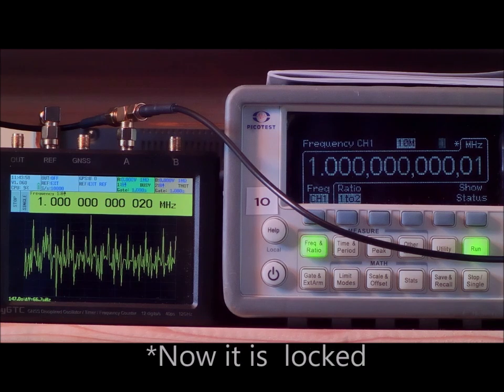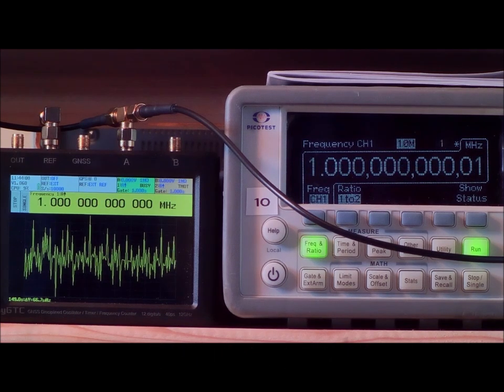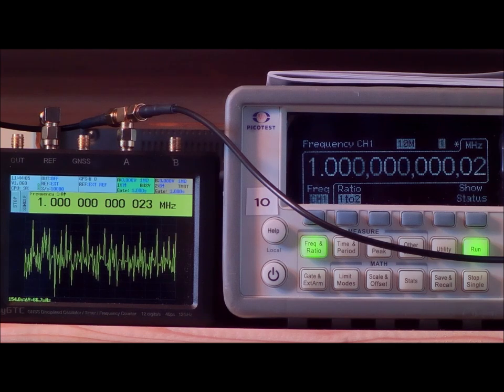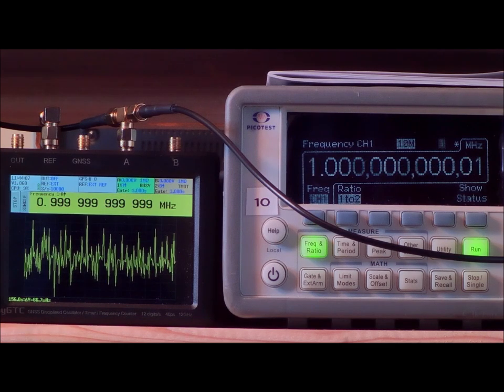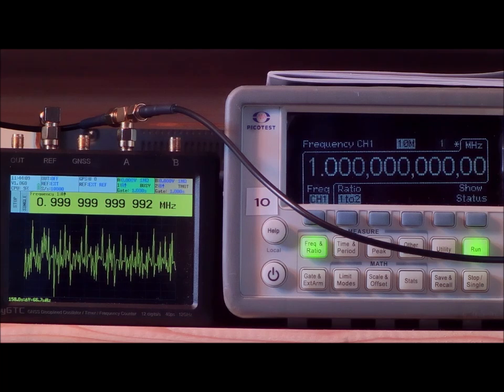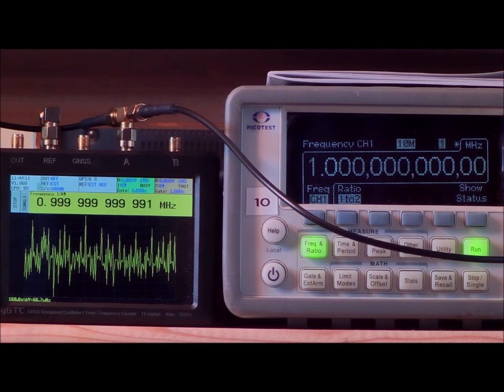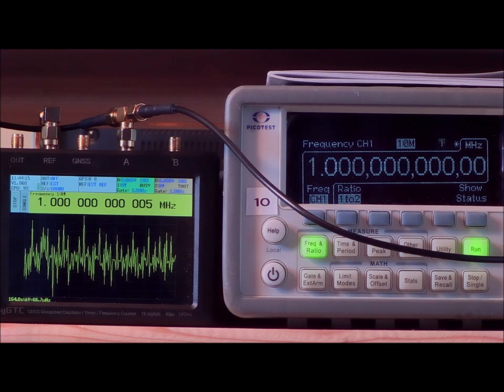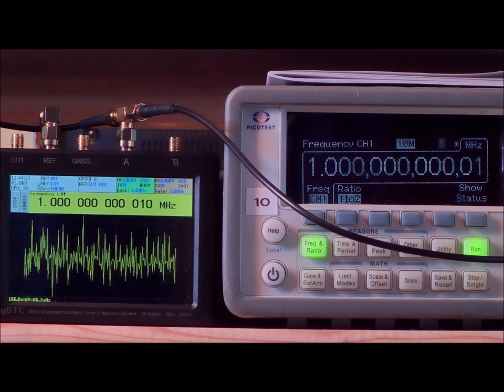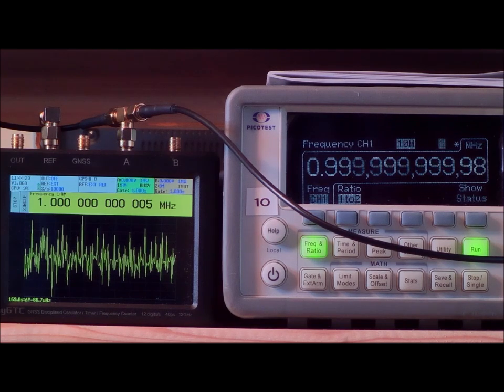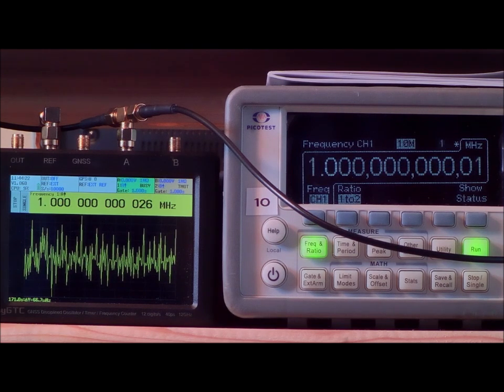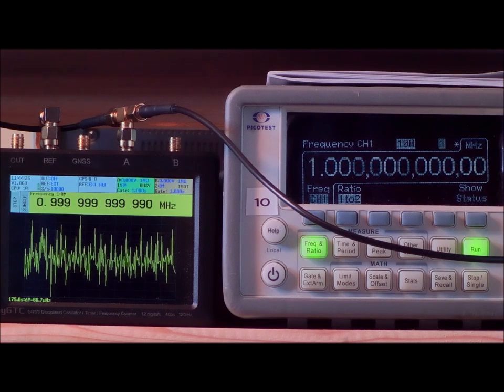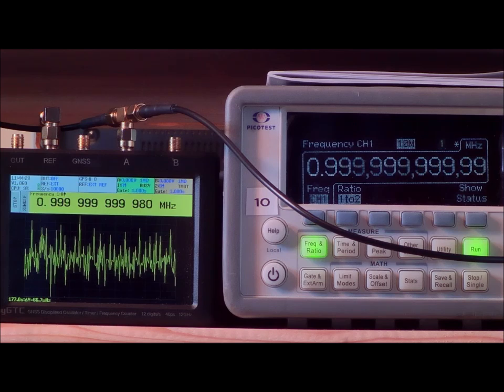Keep in mind the TinyGTC displays one additional digit, which doesn't mean it has one digit more accuracy, but when you compare the readings, you have to think about that extra digit. The frequency variation that is tracked in the chart underneath the measurements is peak-to-peak 66 microhertz compared to the actual measured frequency of 1 MHz.